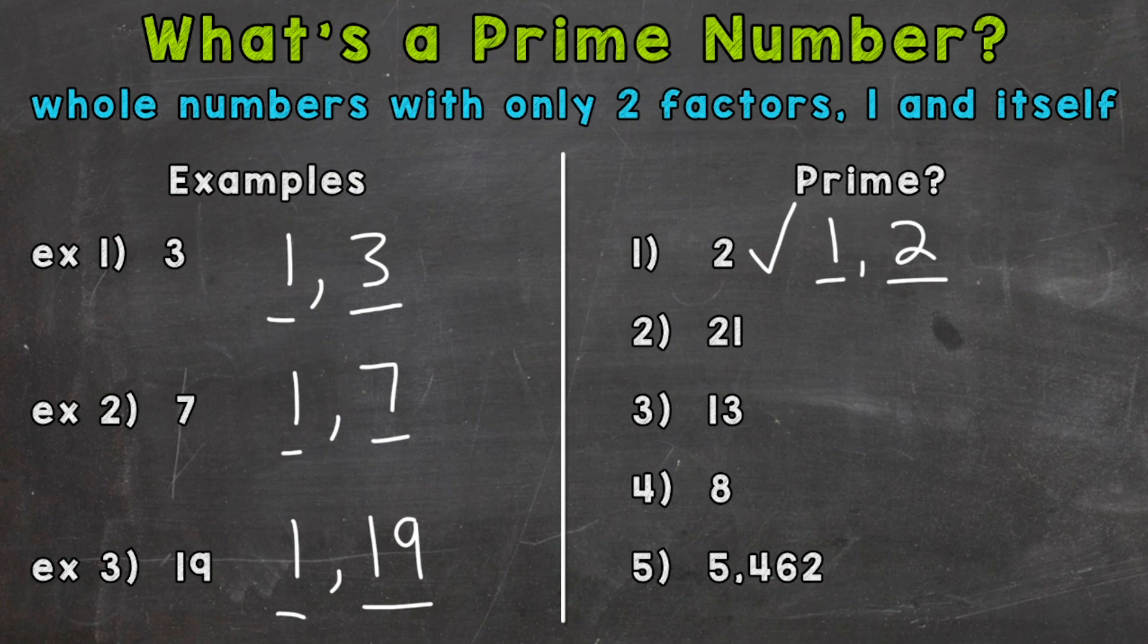Let's take a look at number two where we have 21. Let's think of the factors or multiplication facts that equal 21, or the numbers that go into 21. We know that one times 21 equals 21, so one and 21 are factors, but also three and seven. So 21 has more than two factors, more than one and itself. So 21 is not prime. It's considered a composite number. I actually have a video about composite numbers where I go into more detail. I'll drop that down in the description.